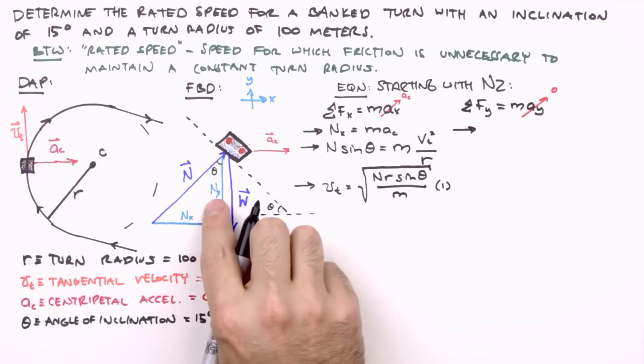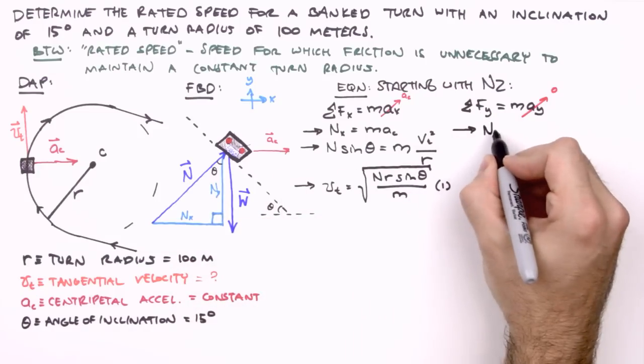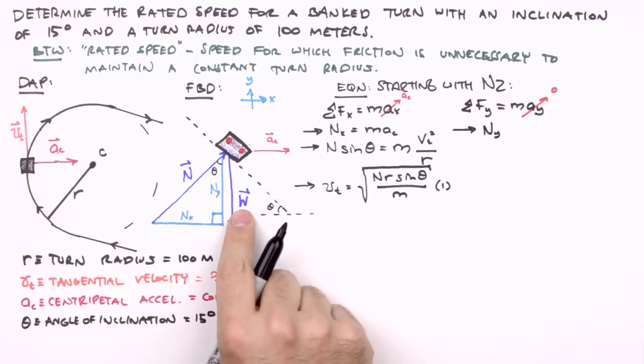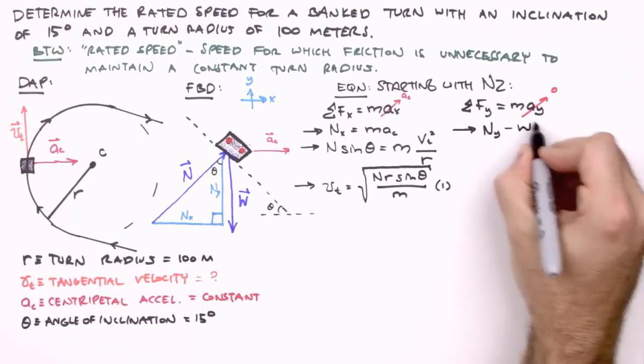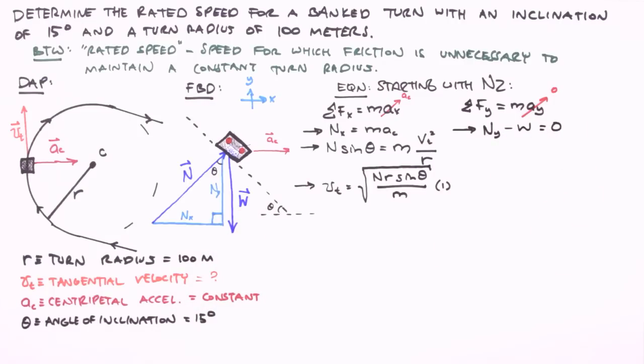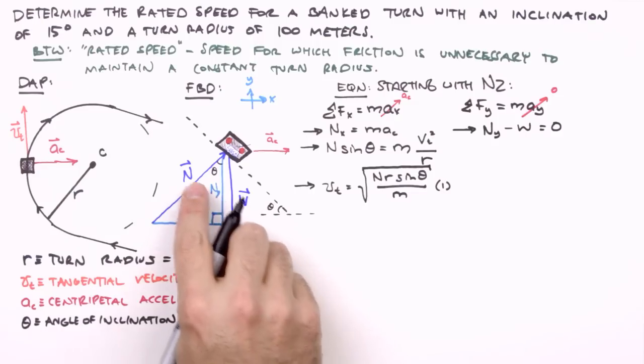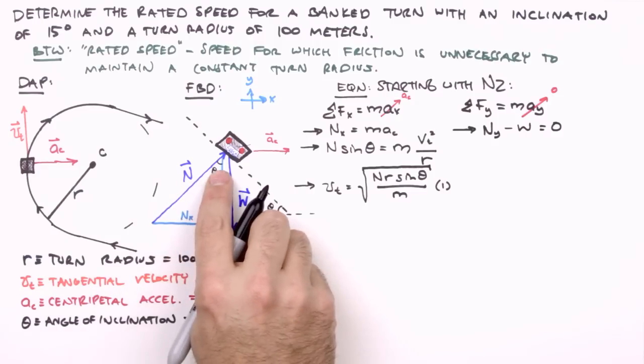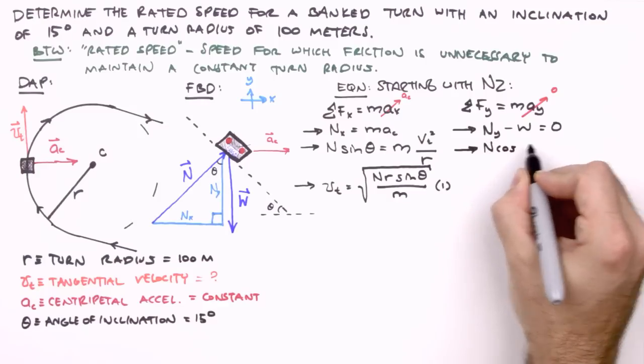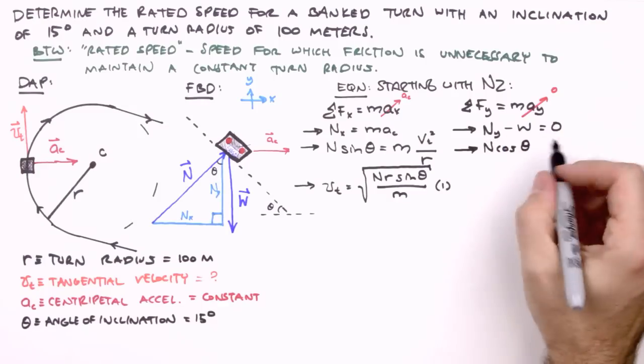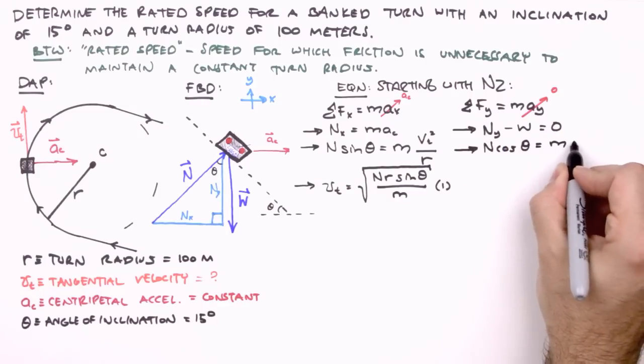Summing the forces in the y-direction, we get n sub y in the positive y-direction, and the vehicle's weight in the negative y-direction equals zero. Here, n sub y is related to n by a factor of cosine theta. So we can write n cosine theta, and we're going to move weight over to the other side and use its mathematical definition, equals mg.